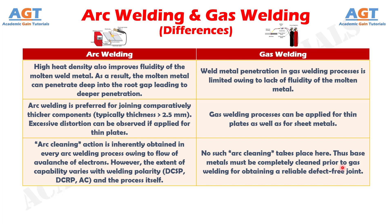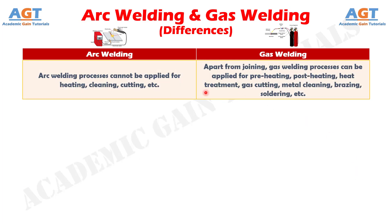Thus, base metals must be completely clean prior to gas welding for obtaining a reliable, defect-free joint. Difference number 13. Arc welding processes cannot be applied for heating, cleaning, or cutting, whereas apart from joining, gas welding processes can be applied for pre-heating, post-heating, heat treatment, gas cutting, metal cleaning, brazing, soldering, and more.